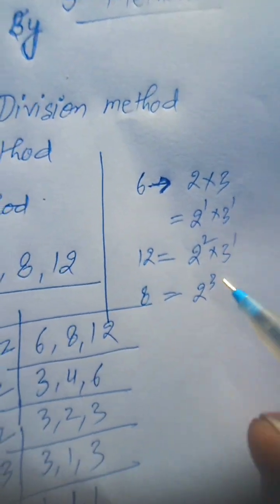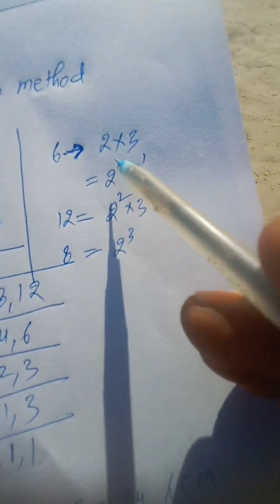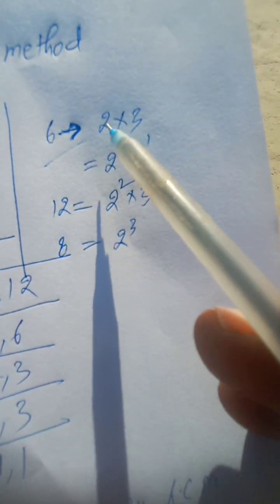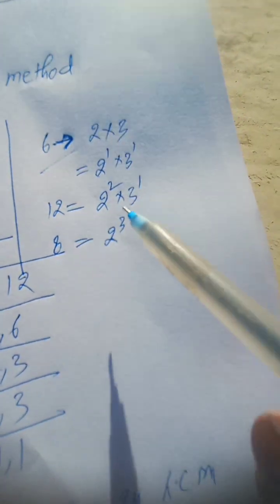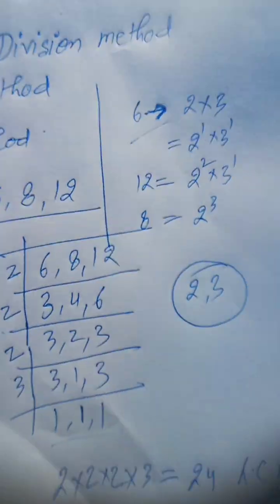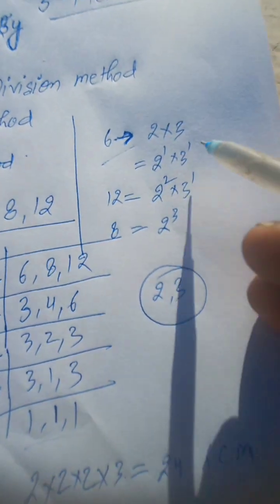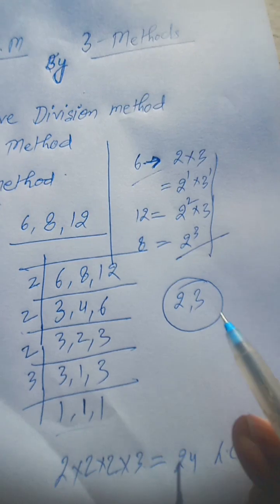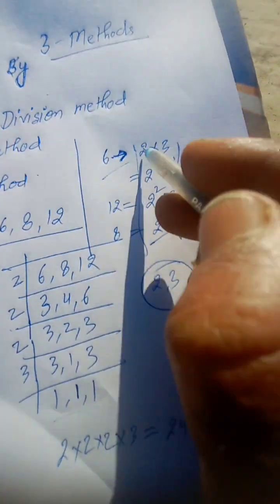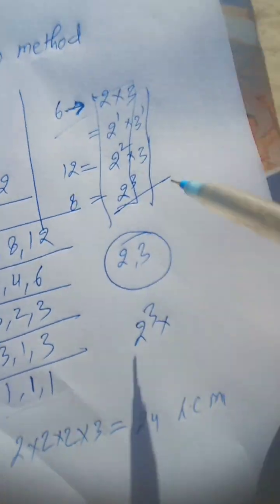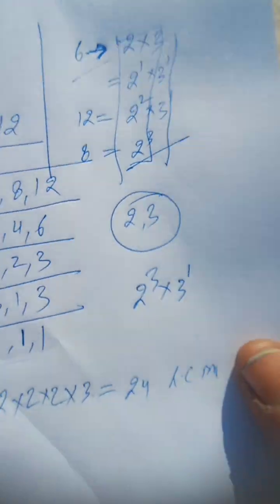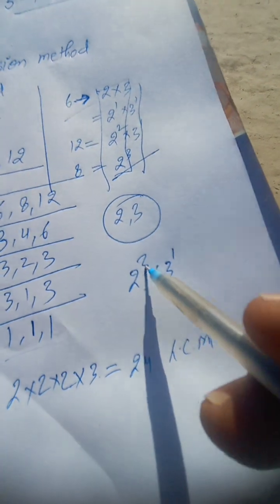Then here you have to see what numbers have come as the bases of the given set of numbers. Here 2 and 3 are the bases. Then highest powers of these numbers in these prime factors will be taken and multiplied. That will be required LCM. Here maximum power of 2 is 2 to the power 3, and maximum power of 3 is 1, which is 3 to the power 1. This will be 2 × 2 = 4, 2 × 8, 3 × 24. Again, this becomes 24.